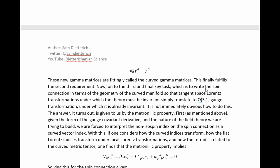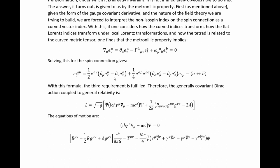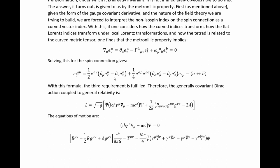Now on to the third and final key task: writing the spin connection in terms of the geometry of the curved manifold so that tangent space Lorentz transformations, under which the theory must be invariant, simply translate to O(3,1) gauge transformations under which it is already invariant. It is not immediately obvious how to do this. The answer is given by the metricity property. Given the form of the gauge covariant derivative and the nature of the field theory, the non-isospin index on the spin connection must be interpreted as a curved vector index. Considering how curved indices transform, how flat Lorentz vector indices transform under local Lorentz transformations, and how the tetrad relates to the curved metric, the metricity property implies a specific relation. Solving this for the spin connection gives it explicitly in terms of the tetrad. Given the symmetries of the spin connection, there are just enough equations to solve for it uniquely, and the third requirement is fulfilled.